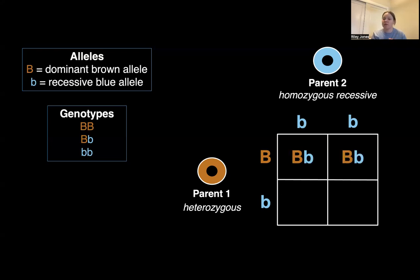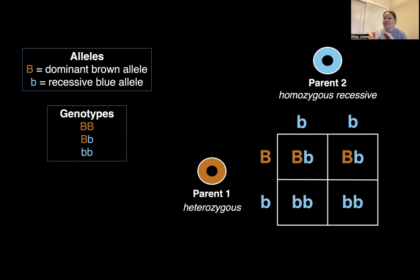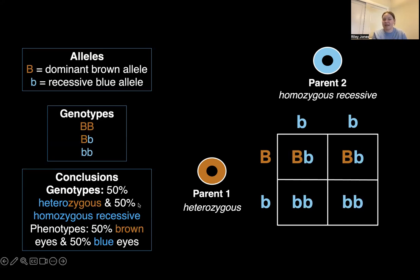So if we start with this box right here, we take the dominant brown eye gene and put it in this box, the recessive blue eye gene and put it in this box. And you do that for each of them — taking this brown eye gene and dragging it over here, and this blue eye gene from up here and dragging it down here. What we see is that we have a 50% chance of the offspring being brown-eyed, because we have these heterozygous genotypes right here, and a 50% chance of the offspring being blue-eyed because we have that homozygous recessive genotype right here. So in this case, we have 50% homozygous recessive and 50% heterozygous, which corresponds with 50% brown eyes and 50% blue eyes.